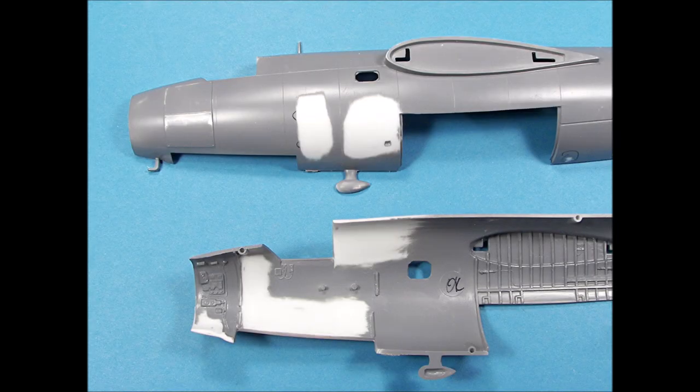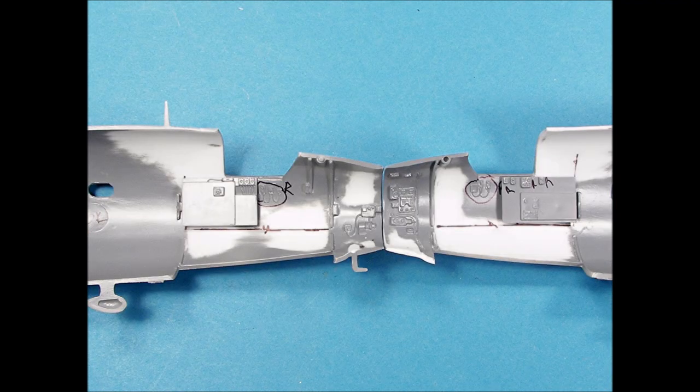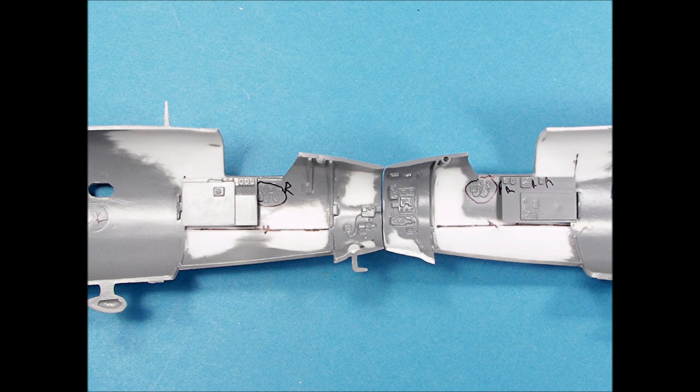There were also some imperfections on the outer surfaces of the fuselage around the cockpit area that also needed to be sanded smooth. I also checked the fit and location of the cockpit sidewall details. This helped me identify areas along the fuselage surface where I could add additional lead weight.